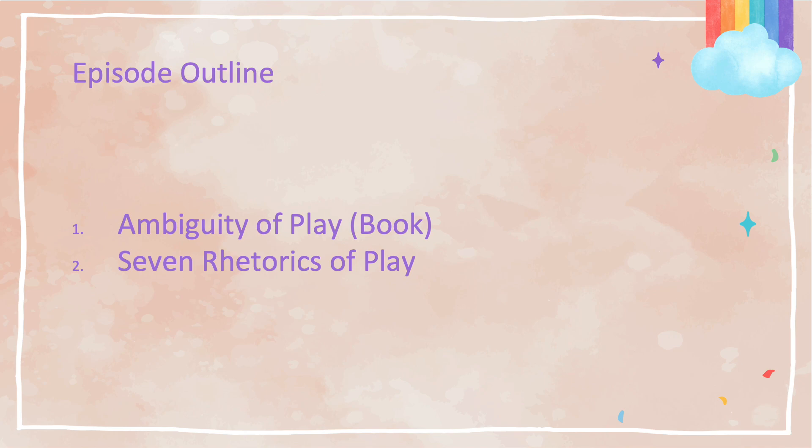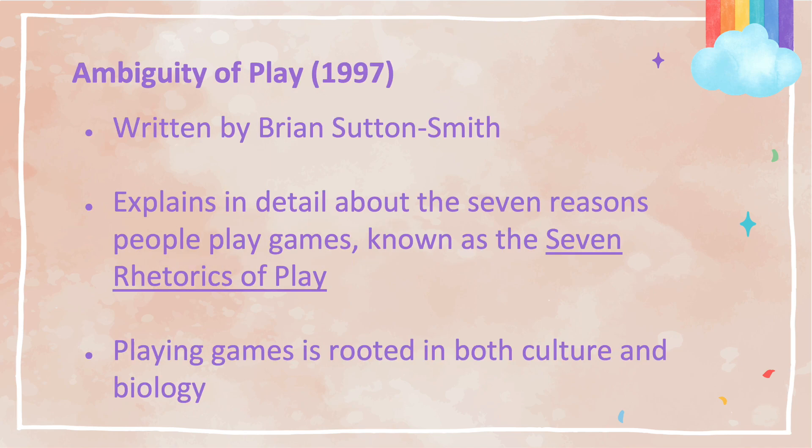In this episode, I will be going over the Ambiguity of Play and each of the 7 Rhetorics of Play. The Ambiguity of Play is a book written by Brian Sutton-Smith, who happens to be both a psychologist and a play theorist. It simply discusses why people play games and explains that games have cultural importance to the people that play them. The 7 Rhetorics of Play is basically seven reasons that Brian theorized are the main core reasons why people play games.